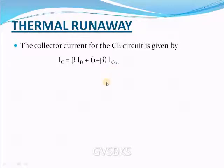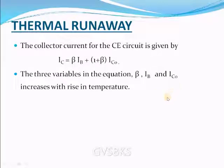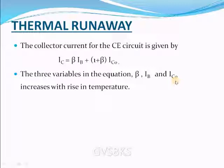We know that there are three variables in the equation — β, IB, and ICO — which all vary with temperature. ICO is a very important variable which increases double for every 10°C rise in temperature.